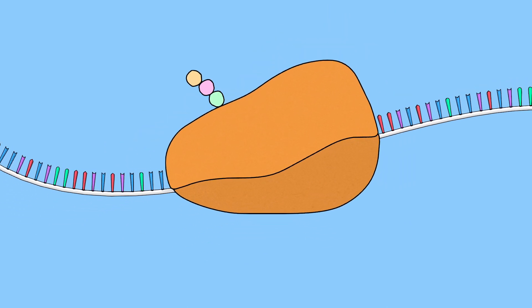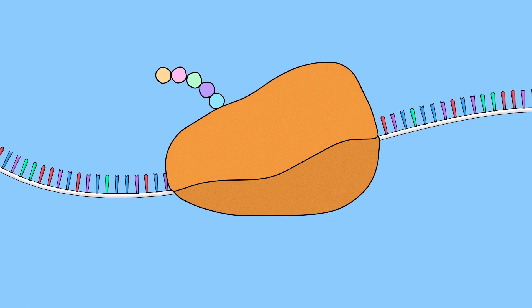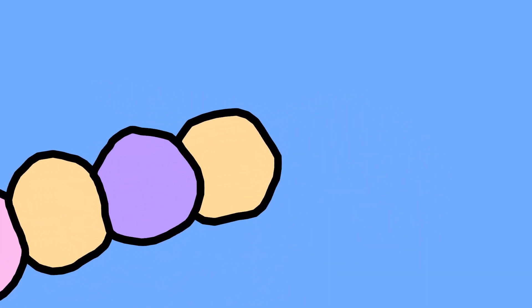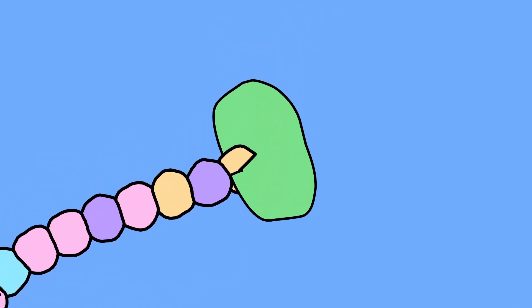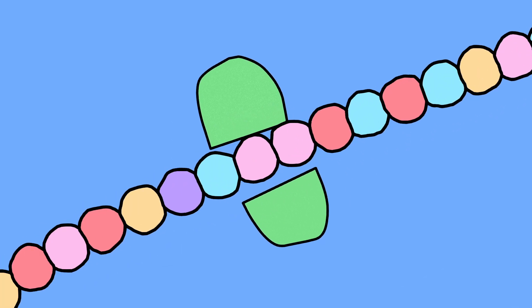Proteins are essential molecules that carry out most biological activities. Some proteins help form important structures within the cell. Other proteins are enzymes that facilitate chemical reactions. For example, this protein works by digesting another protein.